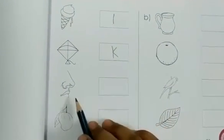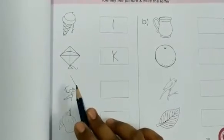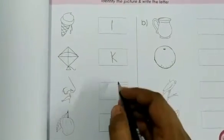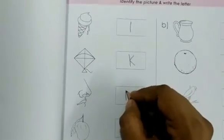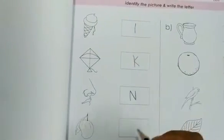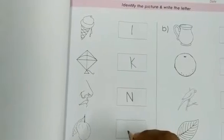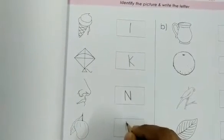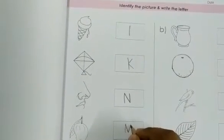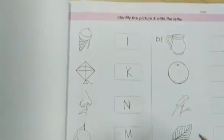N for nose. What is this? This is nose. N for nose. This is N. What is this? Mango. M for mango. Okay?